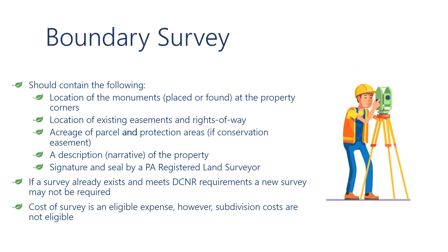Having a boundary survey completed that clearly delineates where the property is located on the ground is a necessary first step in the perpetual stewardship of the DCNR-funded property. The boundary survey will need to locate existing monuments as well as those that were set, locate any existing easements or right-of-ways, and confirm acreage of the subject parcel. If the survey is for a conservation easement, it must confirm total acreage as well as the acreage for each of the three protection areas. The surveyor will also need to provide a narrative or description of the property and GIS shapefiles. Both the grantee and their surveyor should read the BRC boundary surveys and title work policy prior to contracting for the boundary survey.